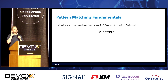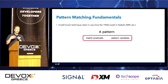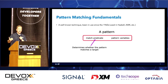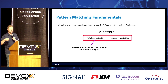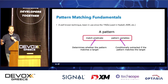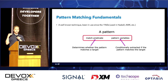A pattern has two parts: a match predicate and a set of pattern variables. The match predicate is basically something we're looking to identify and match against. We have a target, we decide whether we match against that, and if we do match, we have our pattern variables — zero or more variables — which we then assign based on the fact that we've matched that pattern.